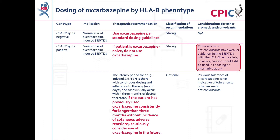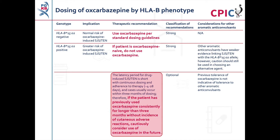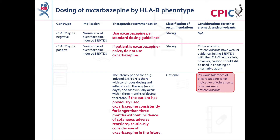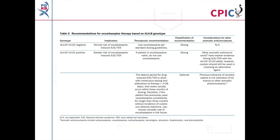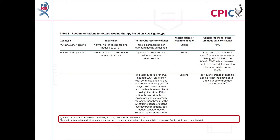Other aromatic anticonvulsants have weaker evidence linking the HLA-B*1502 allele and SJS-TEN; however, caution should still be exercised when selecting an alternative agent. If the patient has previously used oxcarbazepine consistently and without incident for at least 3 months, further use can be considered with caution. This is an optional recommendation. Note that tolerance to oxcarbazepine is not indicative of tolerance to other aromatic anticonvulsants. The dosing recommendations for oxcarbazepine can be found in Table 3 of the guideline, with detailed footnotes at the bottom of that table.